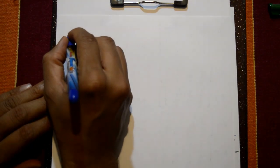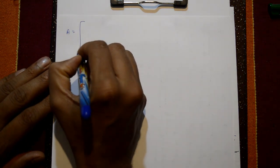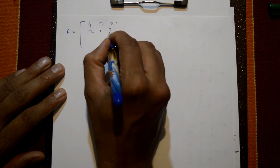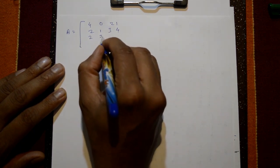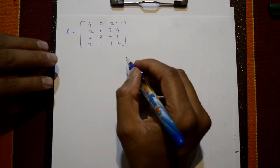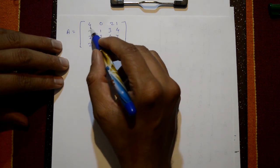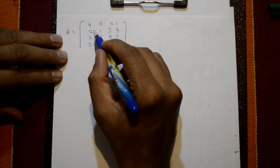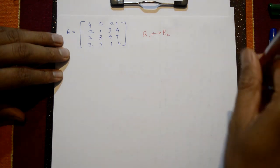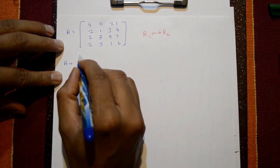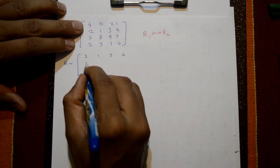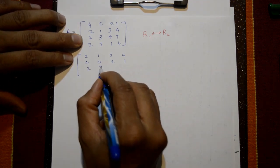Next example: matrix A is 4×4 with entries 4, 0, 2, 1 / 2, 1, 3, 4 / 2, 3, 4, 2 / 3, 1, 4, ... The required leading number is 1. Among the first column entries 4, 2, 2, 3, the value 2 is nearest to 1, so we interchange R1 and R2.